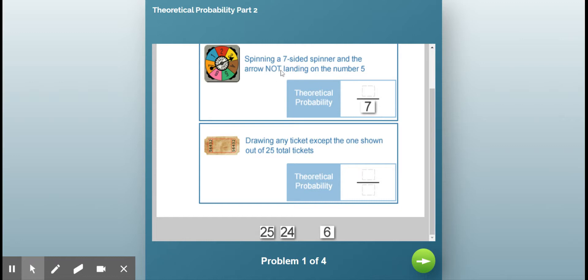But now I've got to realize that this word not is here, and I do not want it to land on the number five. So I don't want this. I do want any of these. So there are six that are not the number five, because one, two, three, four, six, and seven are not the number five.